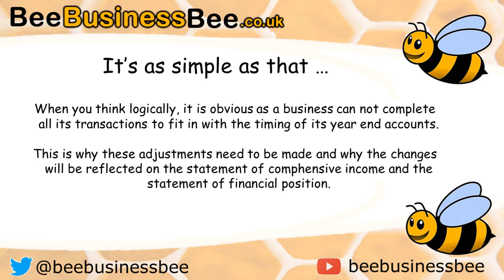When you think about it, it's really quite simple — you've just got to think logically about this process. A business cannot complete all its transactions to fit in with the timing of the end of its accounts, which typically is yearly. It can't shut down every year and then restart once again. That's why we need to make these adjustments, and why these changes have to be reflected on the Statement of Financial Position and the Statement of Comprehensive Income. In this video I've focused on the main changes to your Statement of Comprehensive Income. You may want to watch other videos on the Statement of Financial Position, and then watch future videos where I explain how those changes will be reflected there.